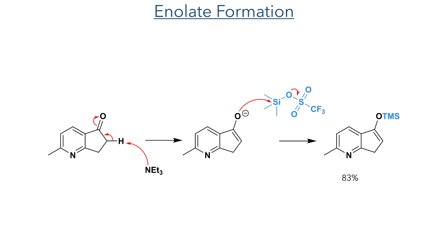In order to install the cyclopropane ring necessary for the nickel coupling, they first had to generate a silyl enol ether. The alpha position of the ketone was first deprotonated using triethylamine, which generates an enolate that reacted with TMS triflate to generate the product at an 83% yield.